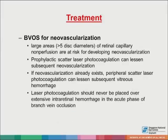In the BVOS study for neovascularization, large areas of more than five disc diameters of retinal capillary non-perfusion are at risk for developing neovascularization. Prophylactic scatter laser photocoagulation can lessen subsequent neovascularization. If neovascularization already exists, peripheral scatter laser photocoagulation can lessen subsequent vitreous hemorrhage. Laser should never be placed over extensive intraretinal hemorrhage in the acute phase of branch vein occlusion, because the laser energy will be absorbed by the intraretinal hemorrhage rather than at the level of the retinal pigment epithelium, damaging the nerve fiber layer and potentially enhancing the development of pre-retinal fibrosis.